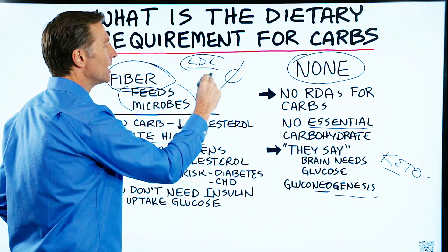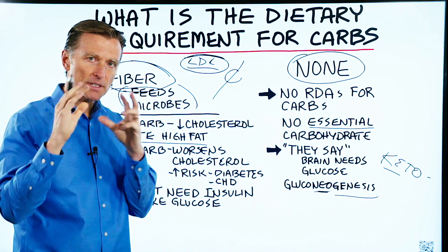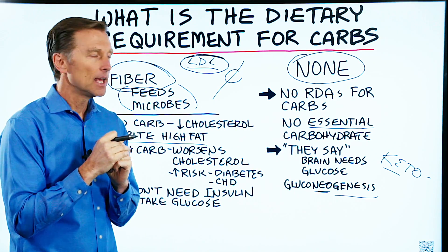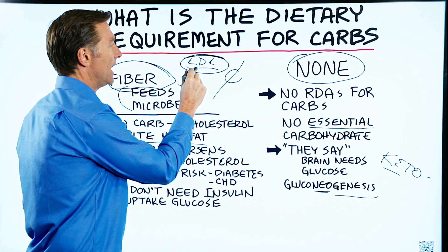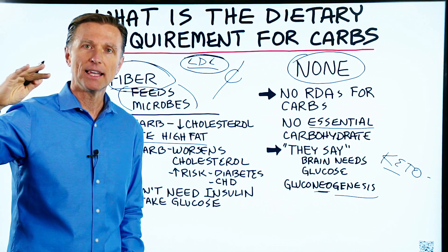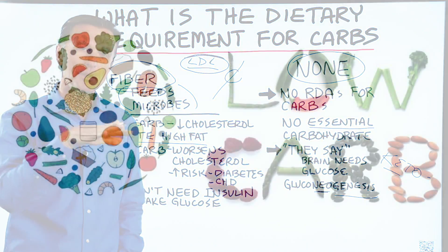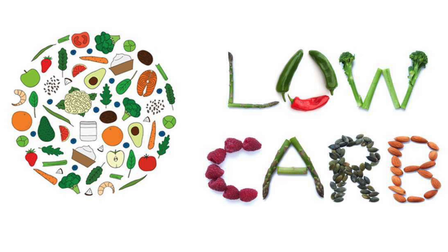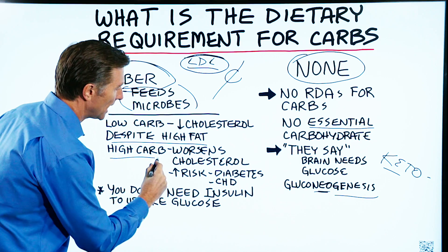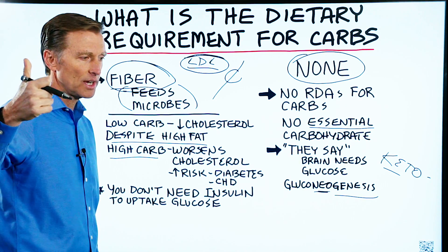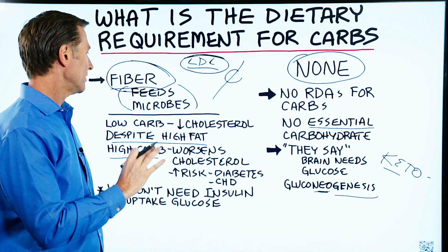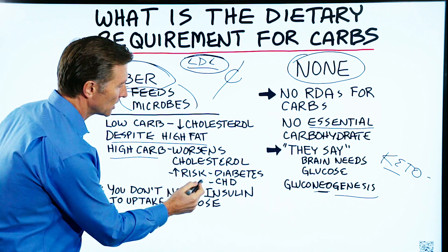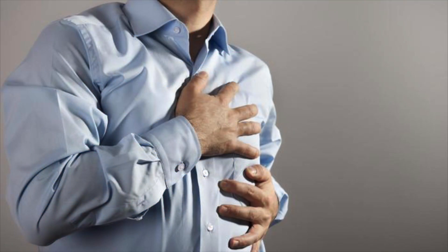If you evaluate LDL for the two different types — large buoyant versus small dense — you're going to find that the good LDL is going to be high and the bad is going to be low. So a low carb diet puts you in a really good place with cholesterol in general. It's when you consume a high carb diet that you worsen your cholesterol ratios, increase triglycerides, decrease HDL, increase the really bad version of LDL, and also increase your risk of diabetes and heart problems.